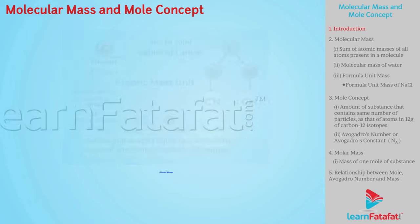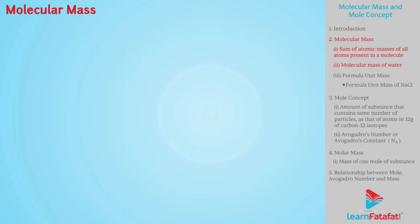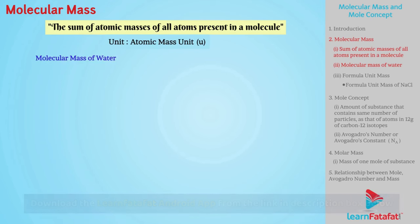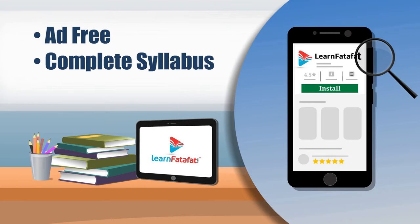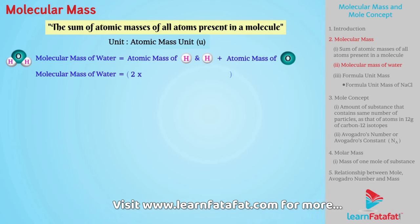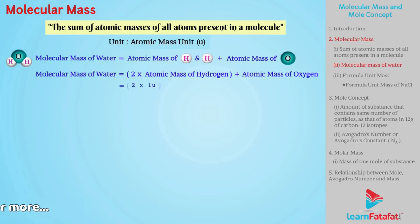In the earlier videos, we have learnt about atomic masses. Here we are going to learn about molecular mass. It is defined as sum of atomic masses of all atoms present in a molecule. It is expressed in atomic mass unit. Let us now calculate molecular mass of water. We know that molecular formula of water is H2O. Therefore, 2 into atomic mass of hydrogen plus atomic mass of oxygen which equals 2 into 1 unit plus 16 unit which equals 2 plus 16 or 18U.